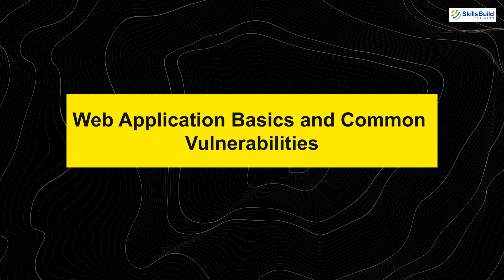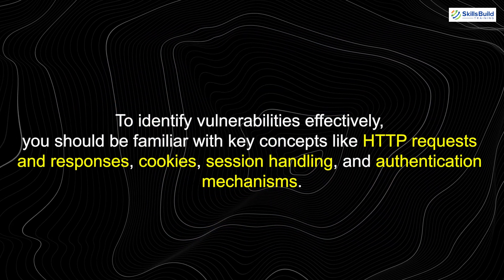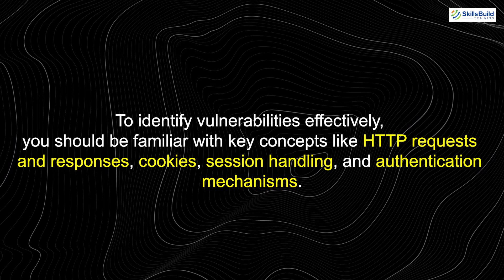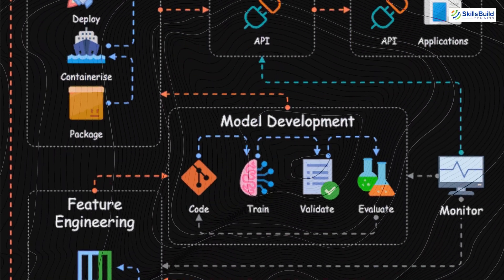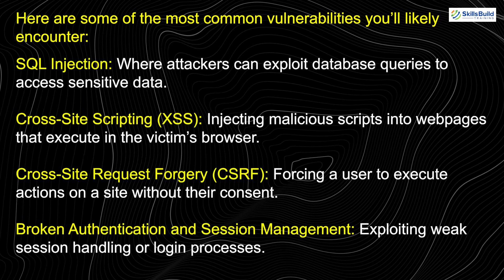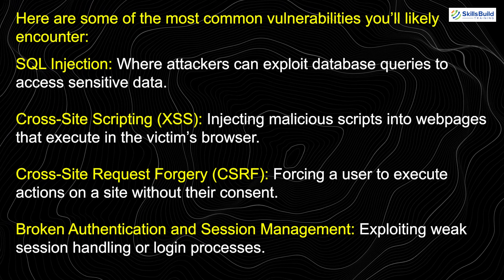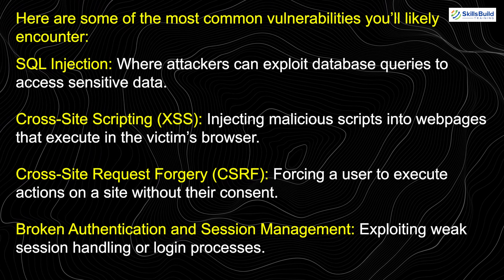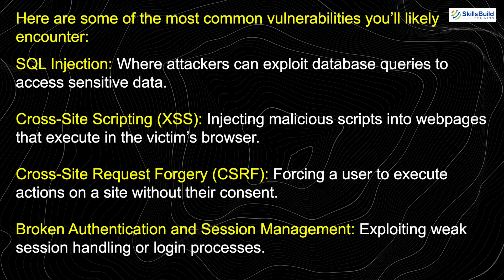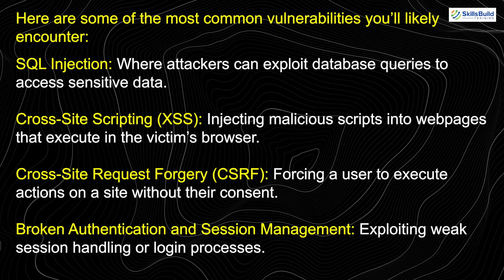Web application basics and common vulnerabilities: understanding web application architecture is essential. To identify vulnerabilities effectively, you should be familiar with key concepts like HTTP requests and responses, cookies, session handling, and authentication mechanisms. Many common vulnerabilities relate to these areas. Here are some of the most common vulnerabilities you'll likely encounter: SQL injection, where attackers can exploit database queries to access sensitive data; cross-site scripting, injecting malicious scripts into web pages that execute in the victim's browser; cross-site request forgery, forcing a user to execute actions on a site without their consent; and broken authentication and session management, exploiting weak session handling or login processes.